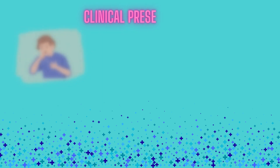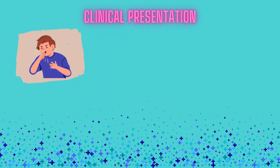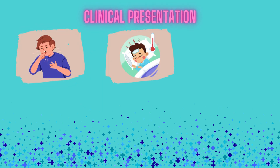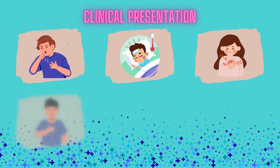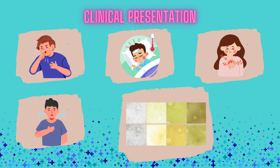Patients will often present with cough, fever, pleuritic chest pain, and shortness of breath. Classic findings include productive cough with purulent sputum and fever.